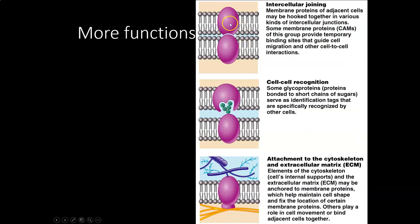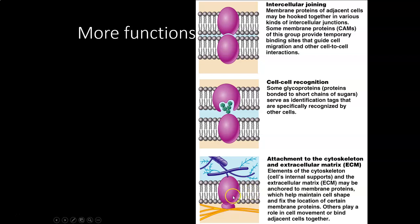Intercellular joining means we can connect one cell to another — the proteins essentially glue themselves to each other. Cell-to-cell recognition involves a glycoprotein with a shape that matches a receptor on a different cell; this is how one cell recognizes that another cell belongs to you, which is important for immune system function. Not all cells connect to each other — sometimes proteins connect a cell to the extracellular matrix instead.